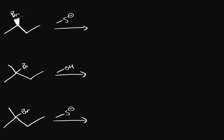In this first reaction we have a secondary halide — it's on a secondary carbon — and we have a strong nucleophile: a sulfur with a negative charge. I specifically picked sulfur with a negative charge because it's actually a weak base, so we won't be considering any E2 or E1 reactions. This will just be a regular backside attack where the sulfur attacks from the backside and replaces the bromine, giving us a product with the sulfur and its carbon group.